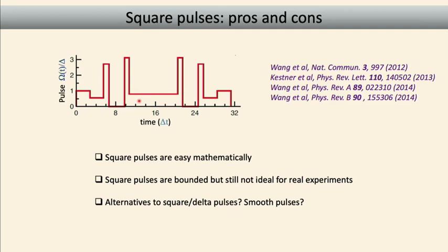Square pulses are nice mathematically but not experimentally — you can't actually produce a waveform that turns on and off arbitrarily fast. After working with experimental groups, we realized this is not a nice way to proceed. Can we relax this constraint, use more physical pulses with smooth shapes, and accomplish the same task? The challenging thing is that we can no longer have analytical control over solutions to the Schrödinger equation if we move away from ideal waveforms.